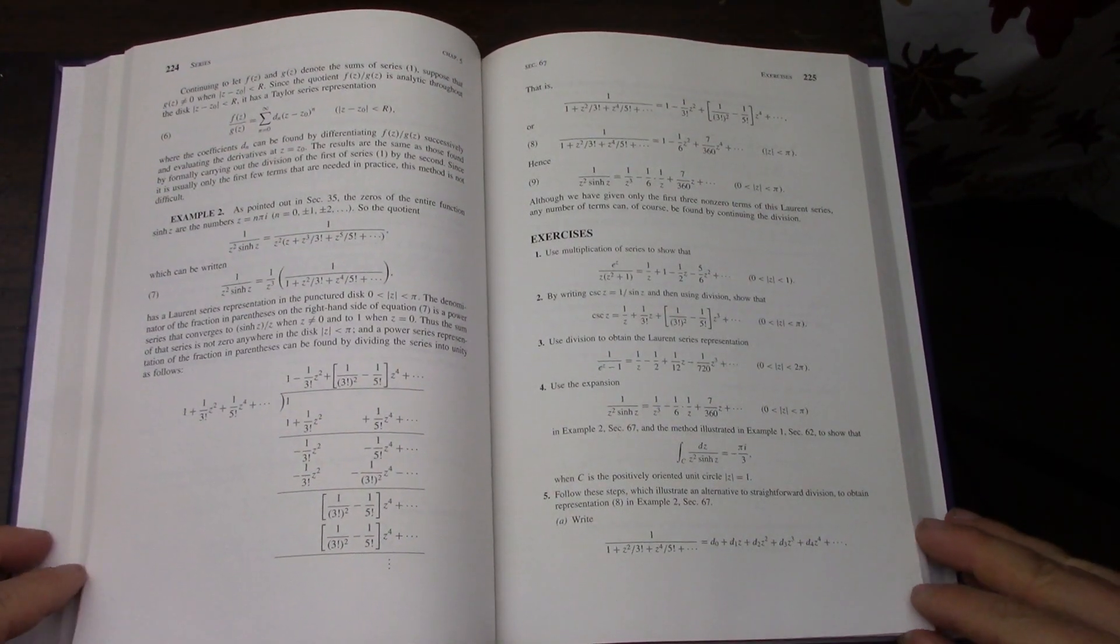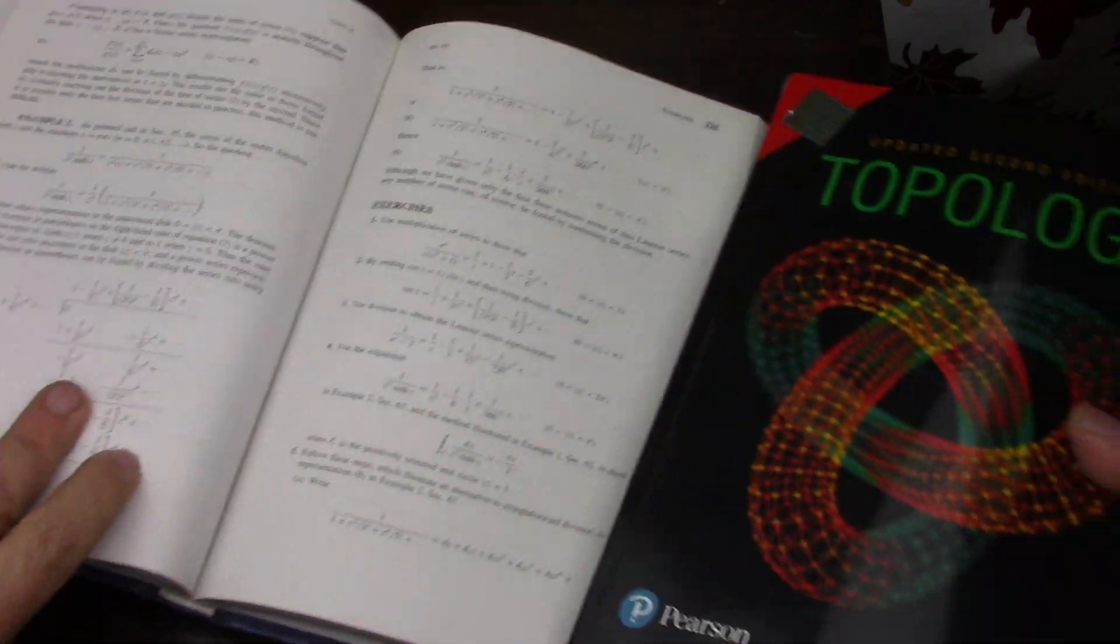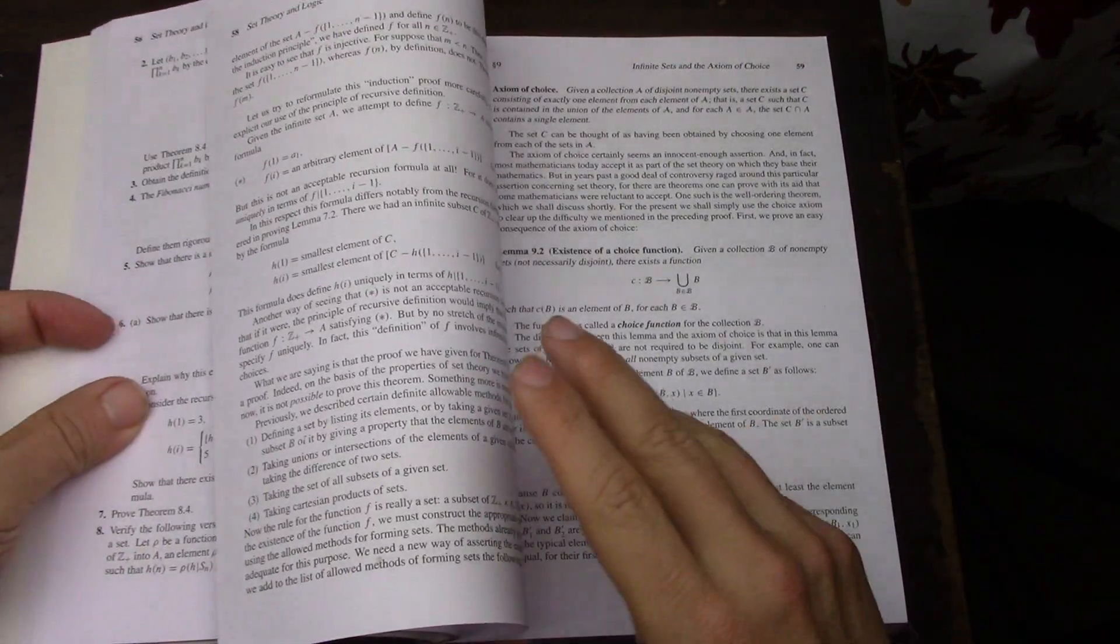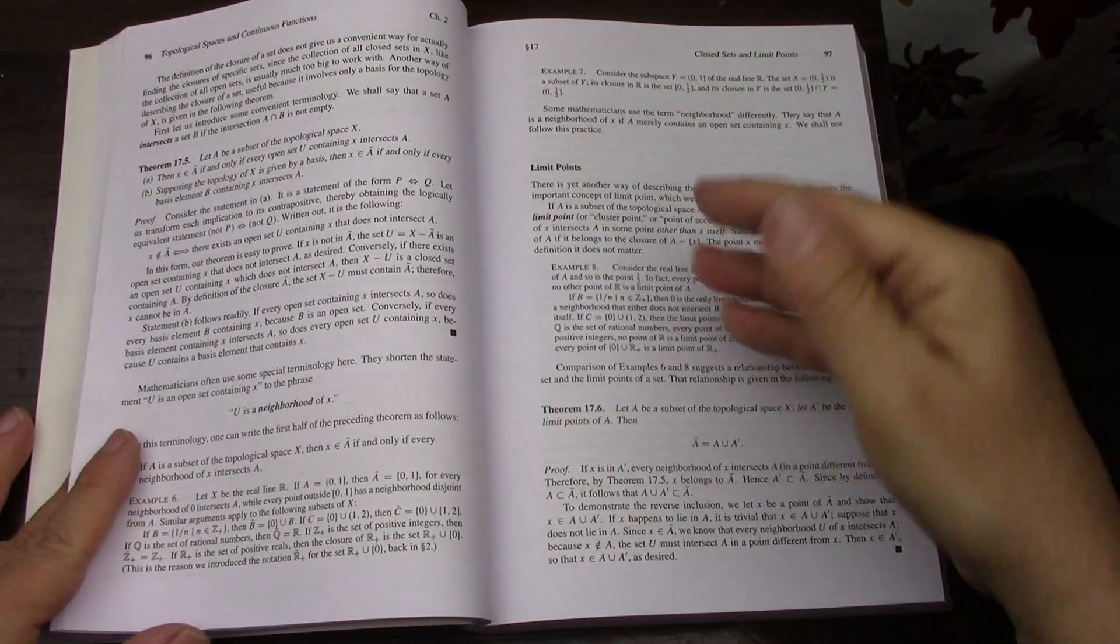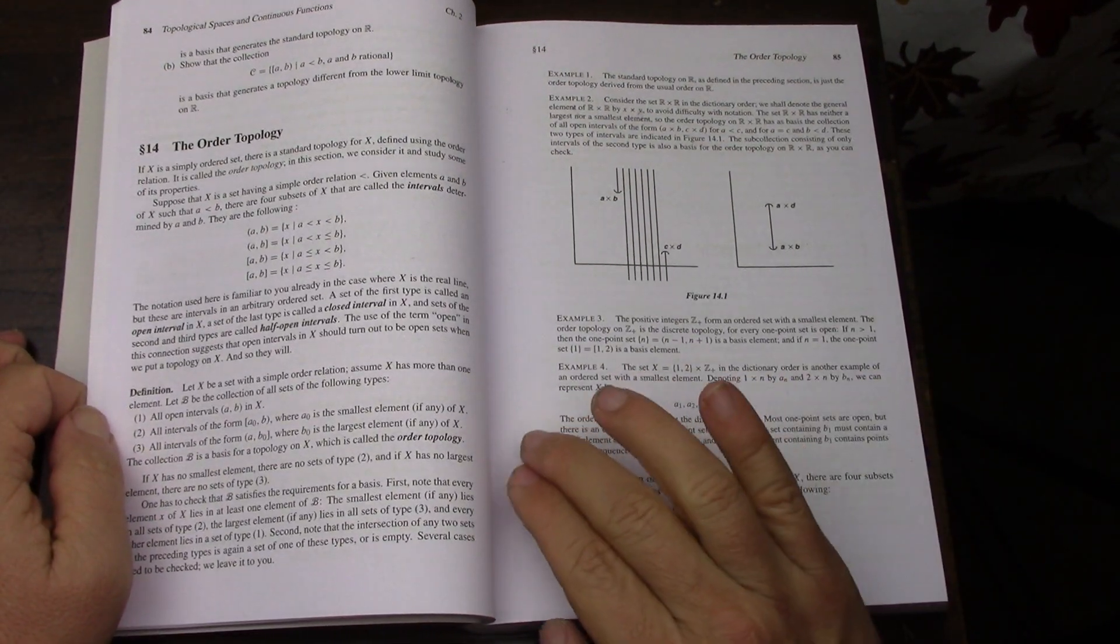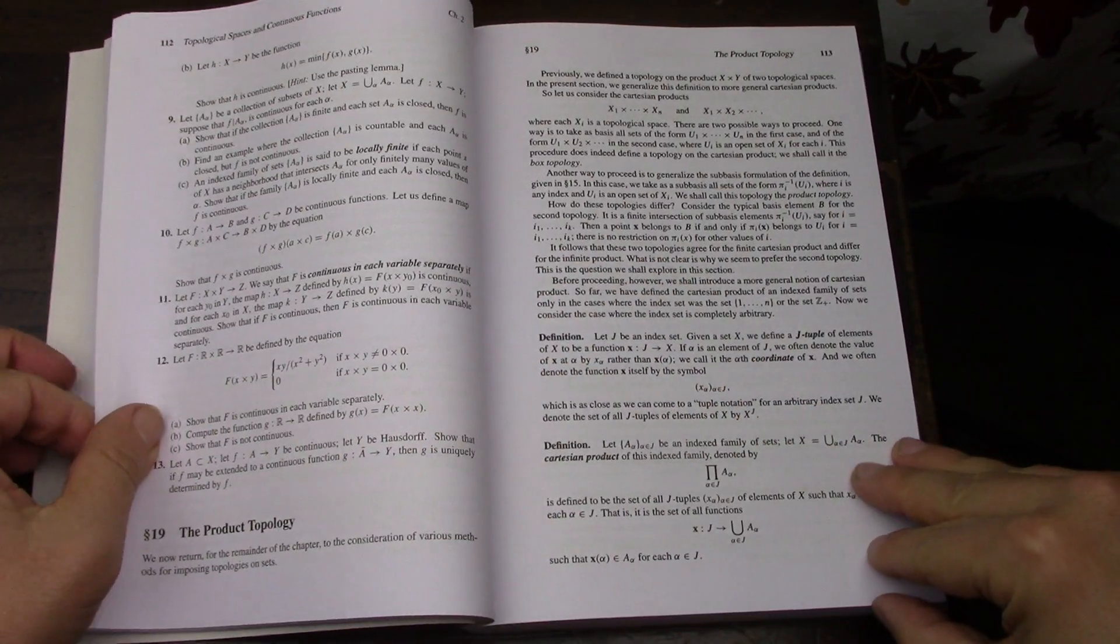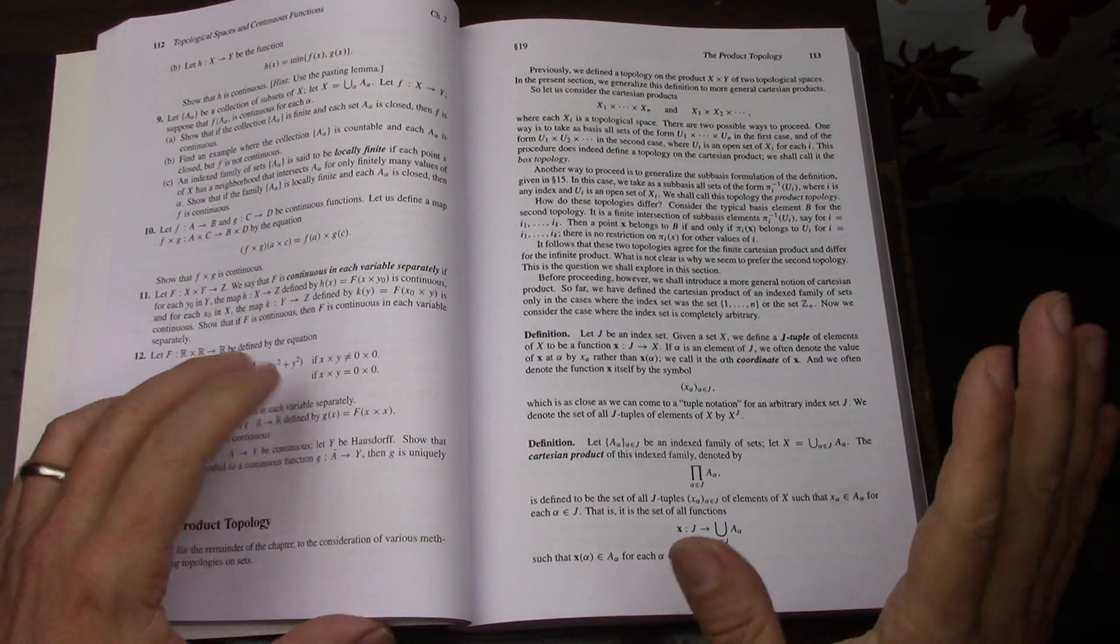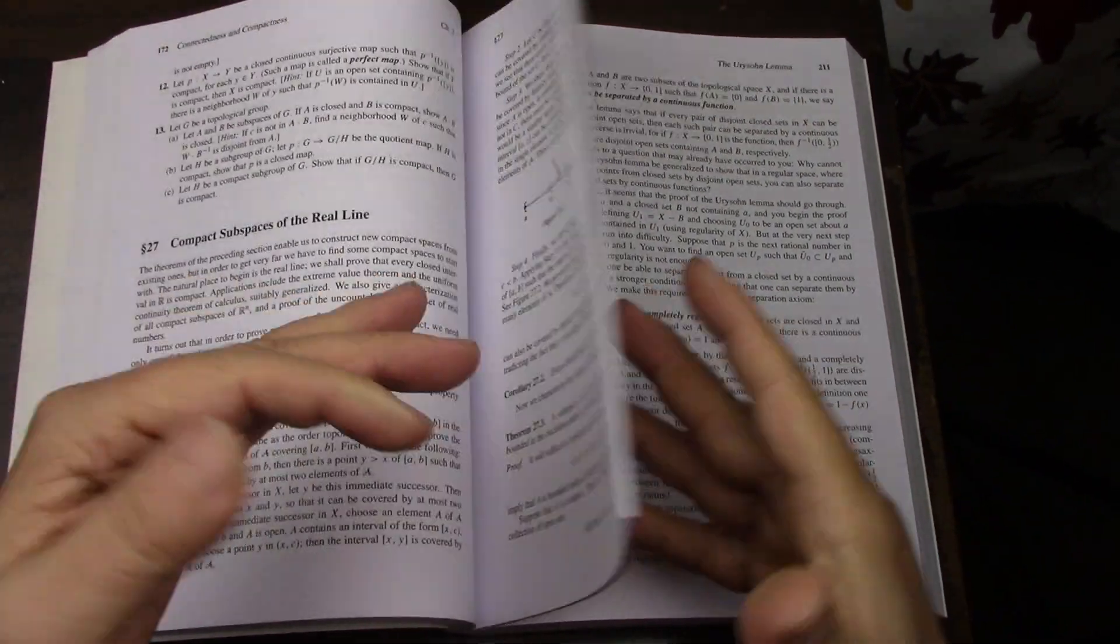One of the things baby Rudin assumes is knowledge of point set topology. I've been using Munkres. I find it useful, I find it readable. I have other topology books but this one I've used the most to understand basic concepts like limit points. At some point I want to go back through baby Rudin and see all the topology that's in it, all the points of topology in one bang. I'm still not sure how I'm going to attack baby Rudin or if I'm going to, but I know that if I do I'm going to need all of these books.